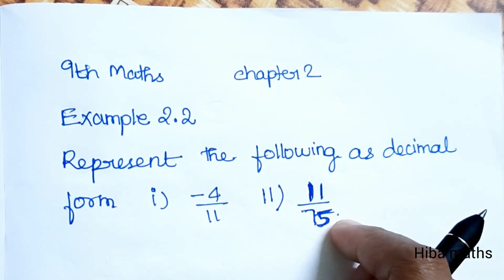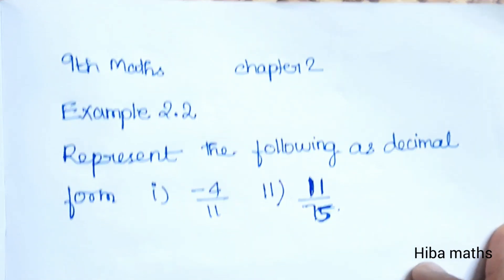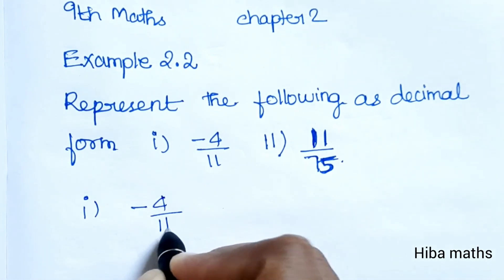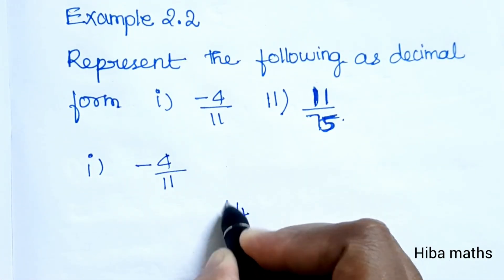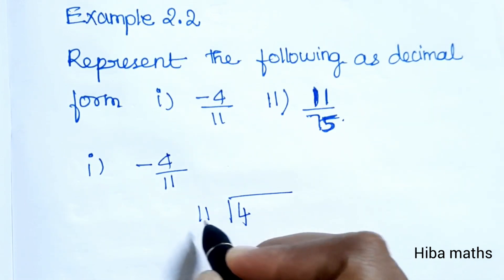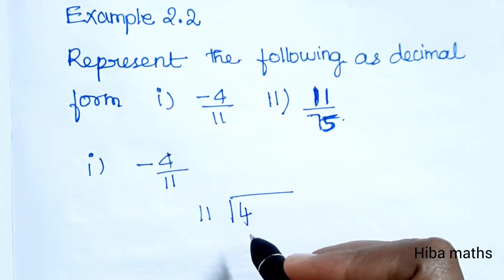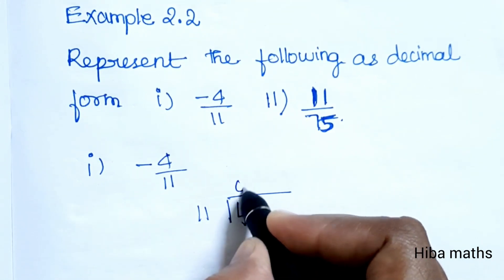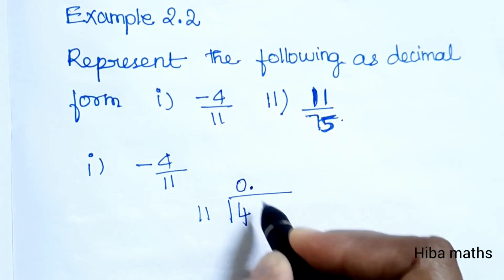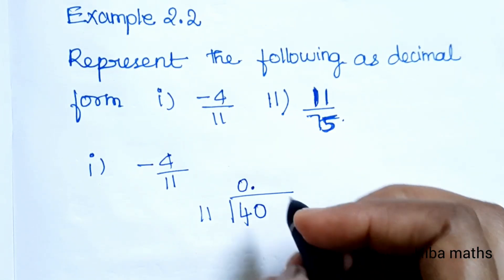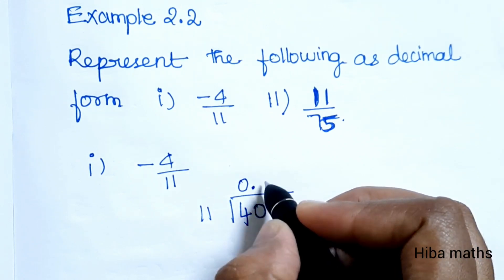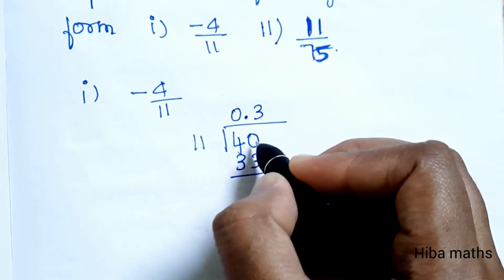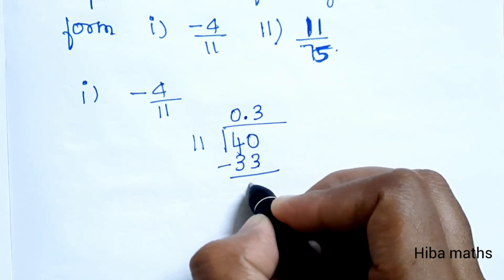Normally we will divide using long division. The first subdivision is minus 4 by 11. First, divide — if we want to divide 4 by 11, we add 0 to get 40. 40 divided by 11 is 3 times, giving 33. The remainder is 7.